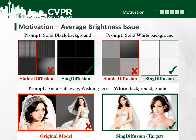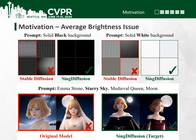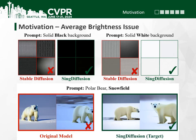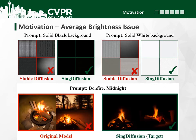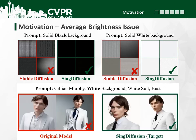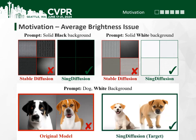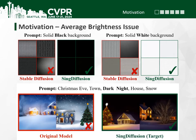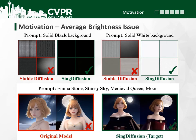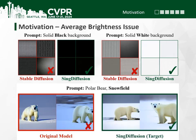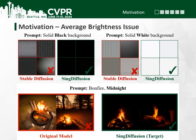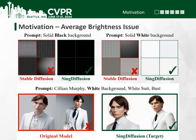In this work, we begin by reviewing the average brightness issue in diffusion models. Most existing diffusion models ignore the sampling at the initial singular time step, resulting in the inability to generate bright and dark images. This we call the average brightness issue.